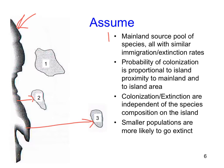A third assumption is that colonization and extinction are independent of the species composition already on the island — new species show up independent of what's already there. The final assumption is that smaller populations are more likely to go extinct than larger populations, so a smaller island may maintain smaller populations, increasing extinction probability. This will factor into the model we're about to examine.